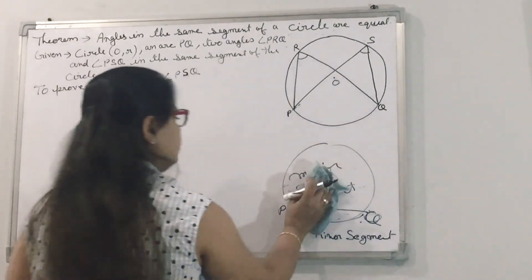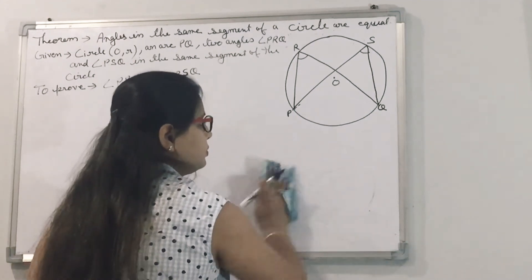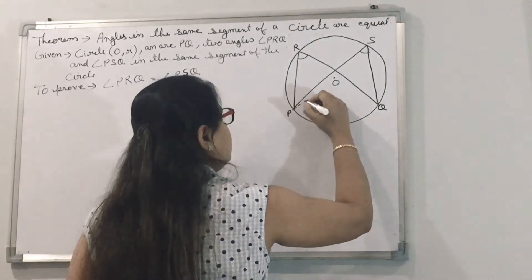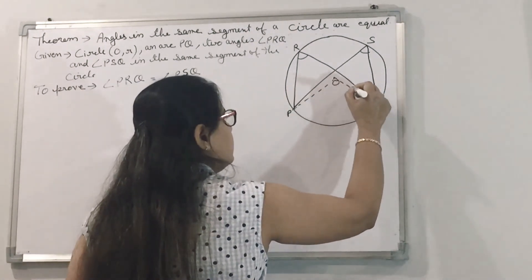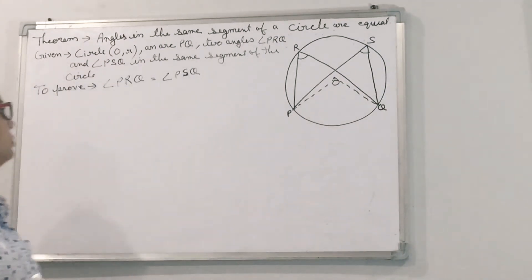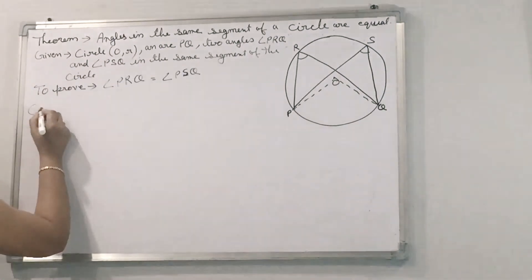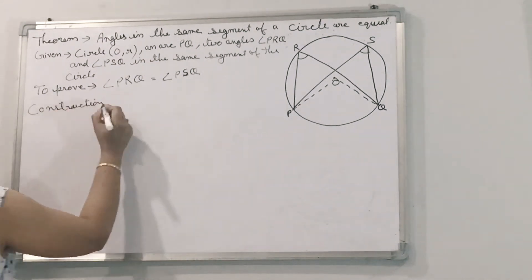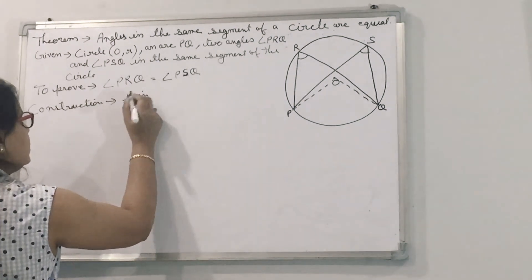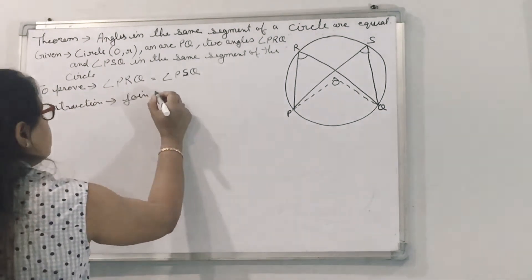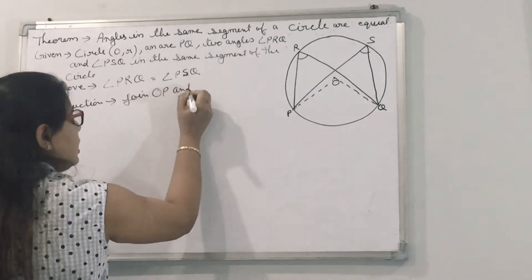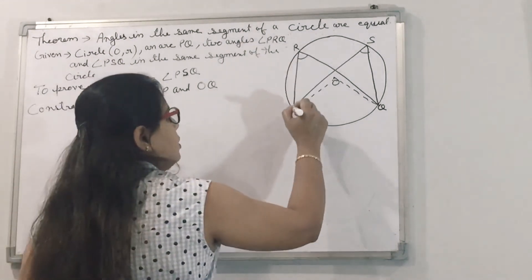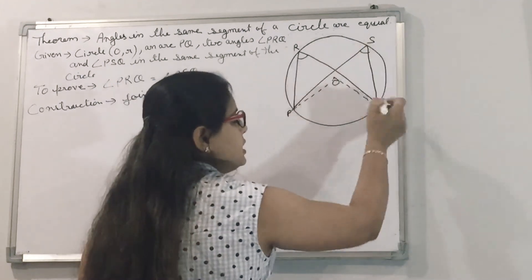Now, first do a construction: join OP and OQ. We have to prove that angle PRQ is equal to angle PSQ.